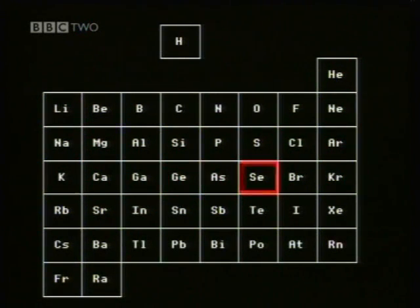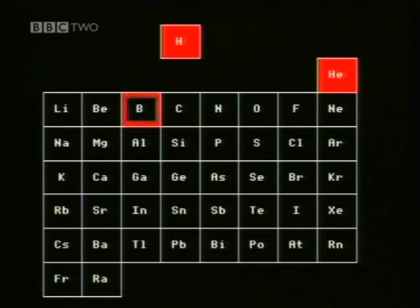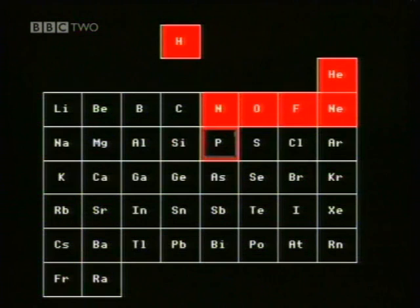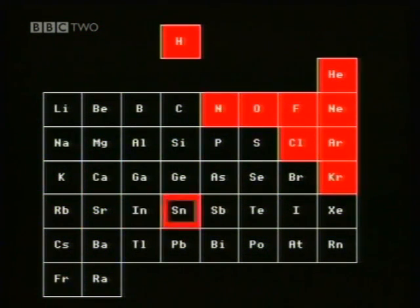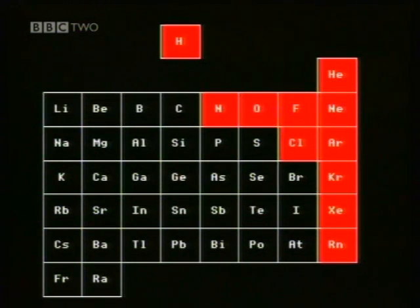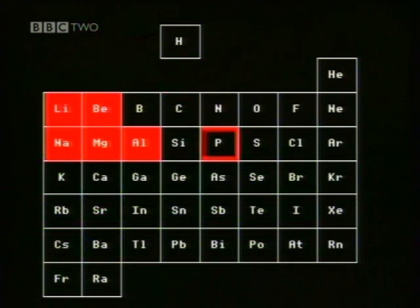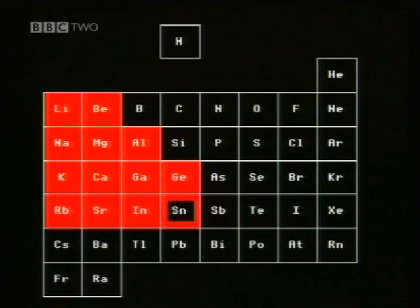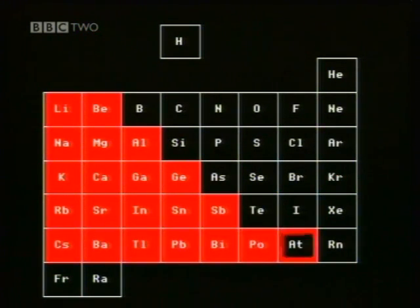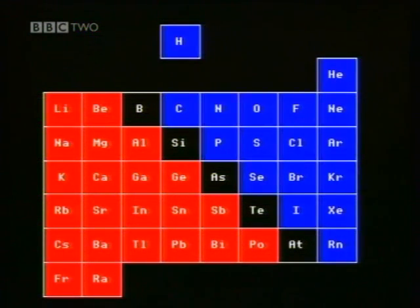If the elements are arranged in order of atomic number, some interesting patterns can be picked out. For instance, these elements are all gases at room temperature. This property disappears and reappears at intervals — there's a pattern. Similar patterns can be seen in the chemical properties of the elements. For instance, these elements are all metals; they conduct electricity. And these are non-metals; they don't conduct electricity. And some elements don't fit easily into either category.